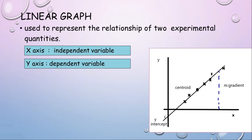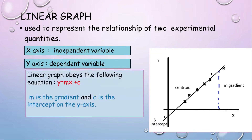A linear graph obeys the following equation: y equals mx plus c, where m is the gradient and c is the intercept on the y-axis.